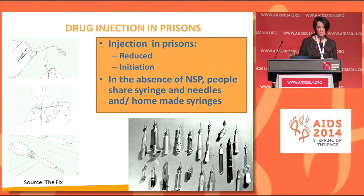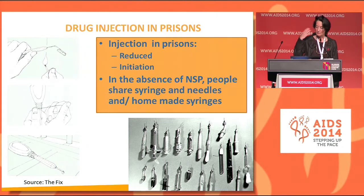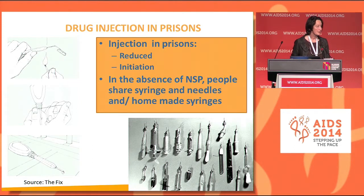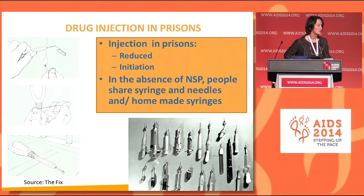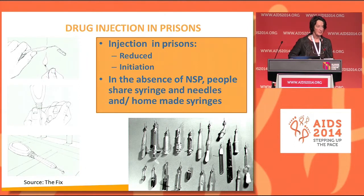On the right side of the slide, for example, these are pictures of homemade syringes that were discovered in prisons in the US. And on the left side, this is harm reduction information actually developed by a harm reduction organization to explain to prisoners how to make safe homemade or prison-made injection equipment in prisons.